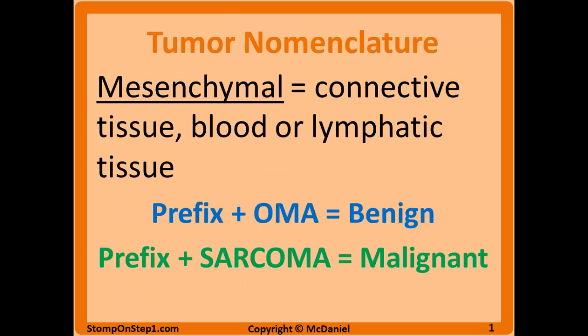First we're going to start with tumor nomenclature. The names for most cancers follow a specific naming system that helps you know what they were talking about. First we'll start with mesenchymal tissue. This includes connective tissue, blood, or lymphatics, and these follow a specific naming system. There's a prefix for different types of tissue that make up the tumor and a suffix to signify whether it is benign or malignant.